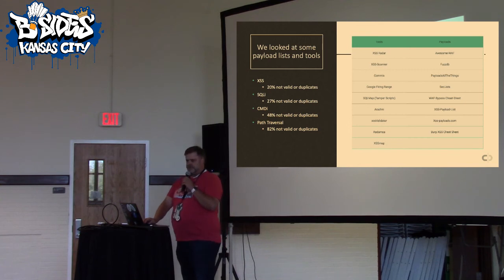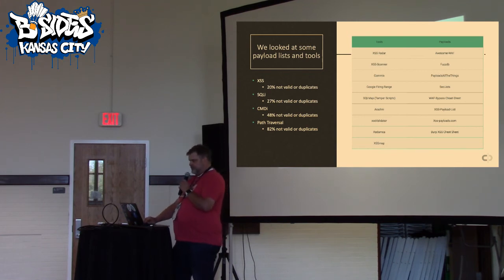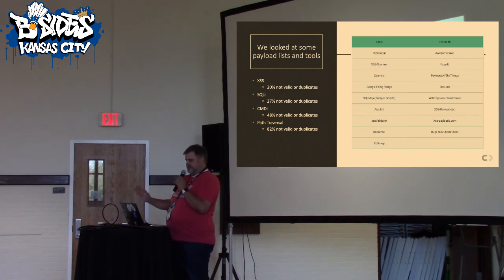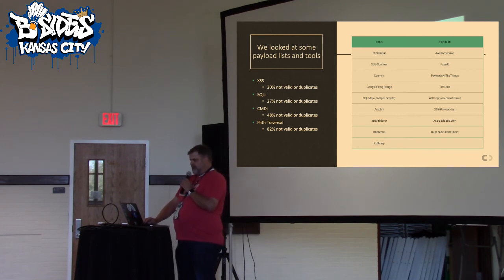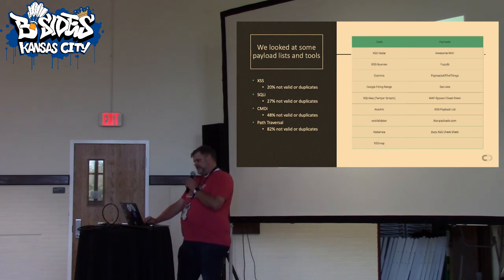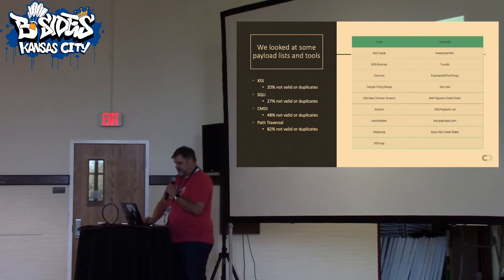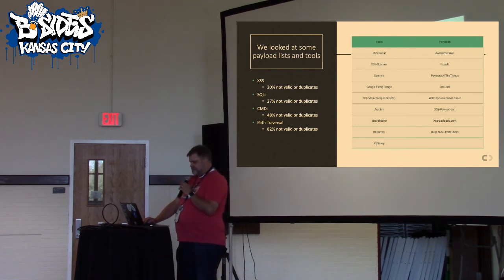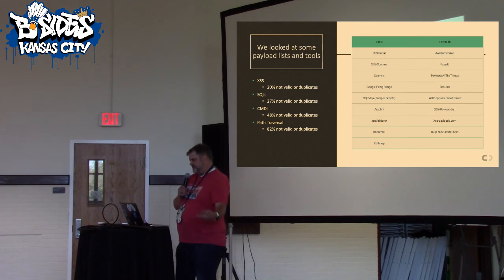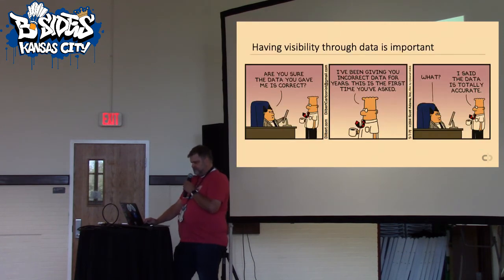We took it further and looked at what tools people are using to scan their applications for comparison — XSS radar, XSS scanner, SQLmap, and various others. We realized all these payload testing tools are pretty flawed: 20% of XSS attacks are either not valid or duplicates, 27% on SQL injection, 48% on command injection, and path traversal was worst at 82% not valid or duplicates. So we're using flawed data, testing two different technologies the same way, expecting the same results — which creates a really weird mentality.